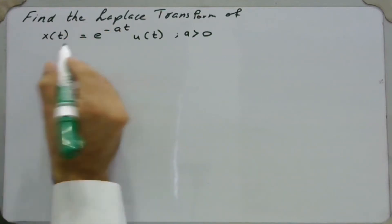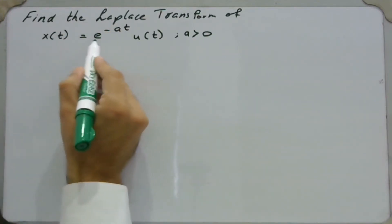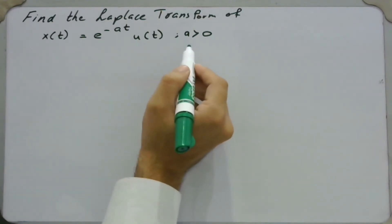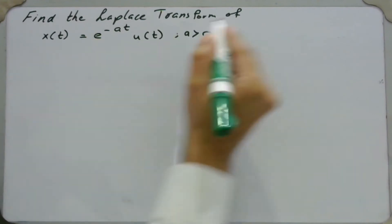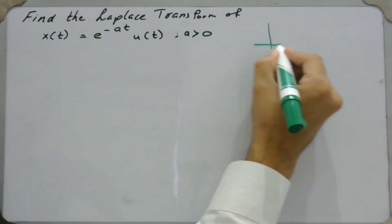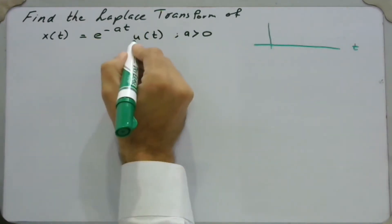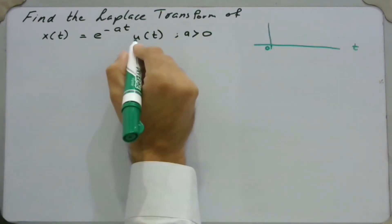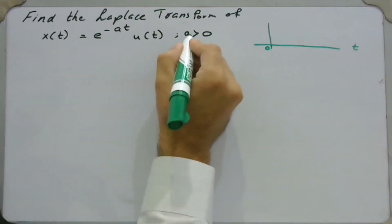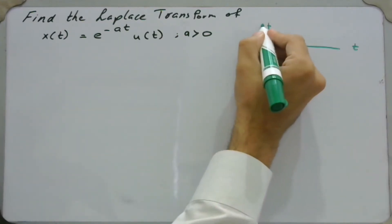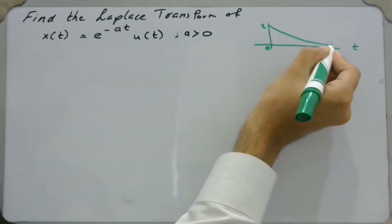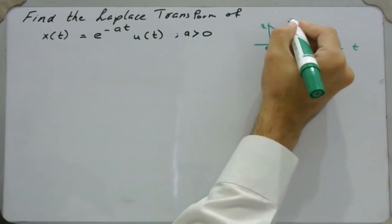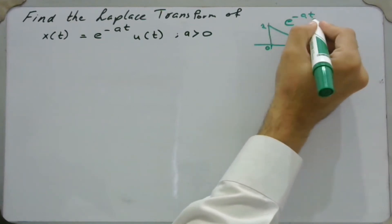We are asked to find the Laplace transform of an exponential function x(t) = e^(-at) u(t), given that a is greater than 0. Let us visualize what this function looks like in the time domain. Since we have a unit step function u(t), it starts at 0 and moves to the right. With e^(-at) and a > 0, the function starts at 1 and converges as time tends to infinity. This is our e^(-at) u(t).